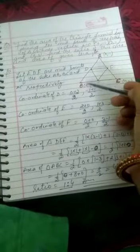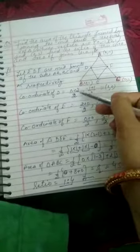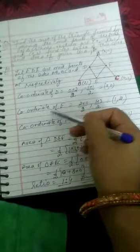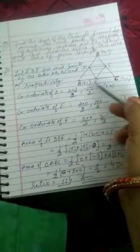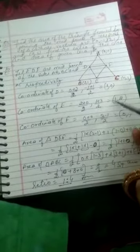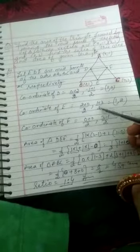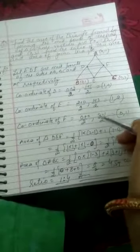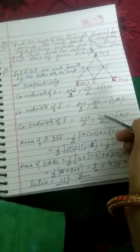So coordinate of D will be 0 plus 2 upon 2, minus 1 plus 1 upon 2, this became 2 upon 2 is 1, minus plus cancel equals 0. Coordinate of E is 2 plus 0 upon 2, 1 plus 3 upon 2, this is 1 and, sorry 3 plus 1 is 4, 4 upon 2 that is equal to 2. Similarly coordinate of F, 0 plus 0 is 0, 3 minus 1 is 2 upon 2 that is equal to 1.